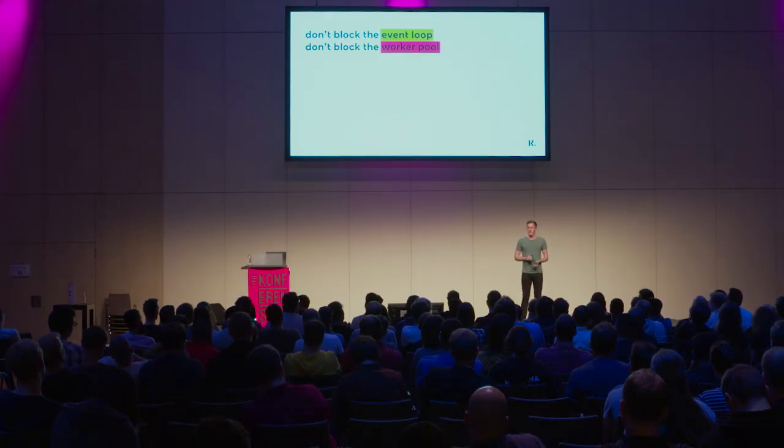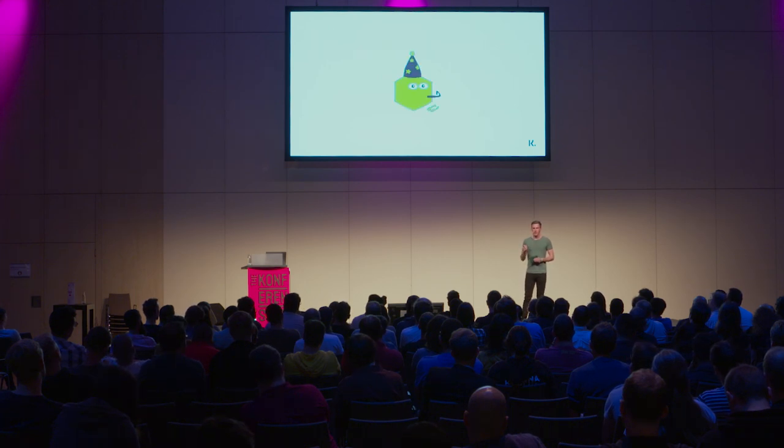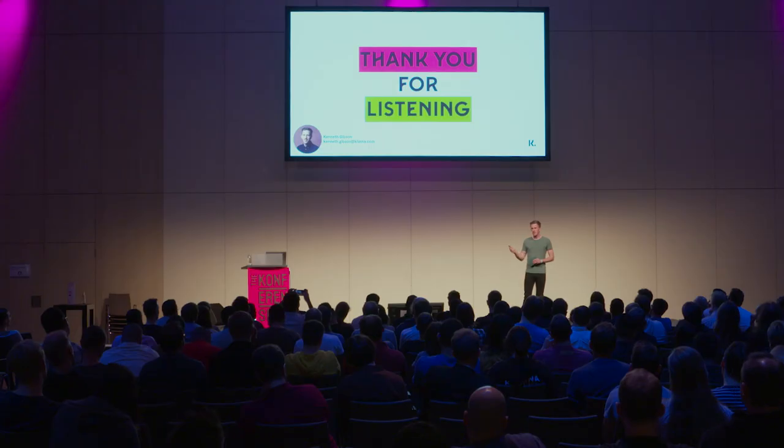In the end, I learned two very important lessons: don't block the event loop and don't block the worker pool. Node successfully manages to avoid common thread-related problems like deadlock, livelock, and race conditions by using a single thread with an event loop and a worker pool to handle blocking I/O. Hopefully this makes it much easier for developers to write asynchronous code — but as we've just seen, it's still extremely important to understand what Node is doing under the covers so we can avoid these common problems. Hopefully now you can all understand exactly how your Node apps are working. Thank you very much for listening.